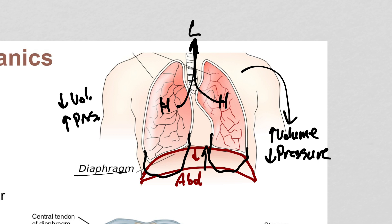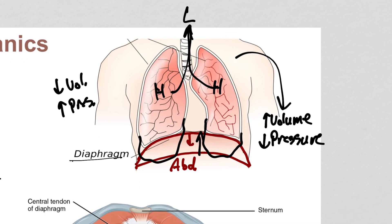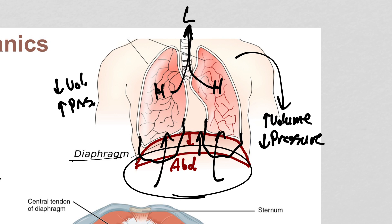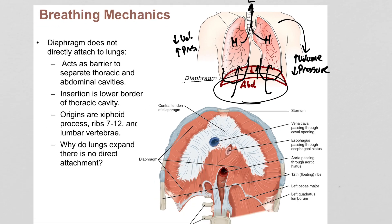If you want to breathe out even harder, you can contract your abdominal muscles and the internal intercostals. The abdominal muscles squeeze on the abdominal cavity and force the lungs up even harder — like blowing up a balloon, blowing out birthday candles, or breathing really hard during exercise. This forceful exhalation only happens when breathing above normal resting levels.